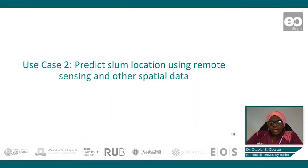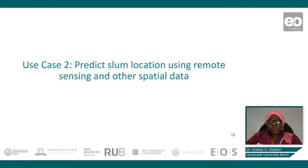In the second use case, we will predict the location of slums in Lagos using remote sensing and other spatial data sets. Before we proceed, let us briefly describe random forest, which is our classification algorithm for this second use case, and also look at our data sets.